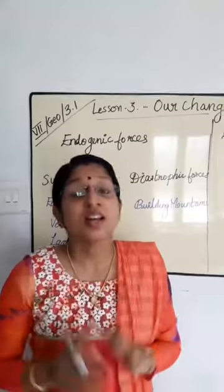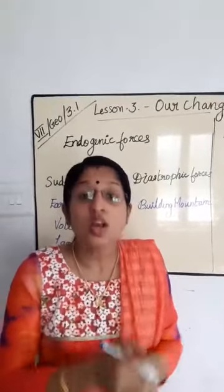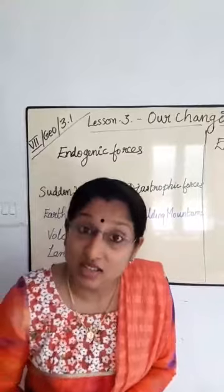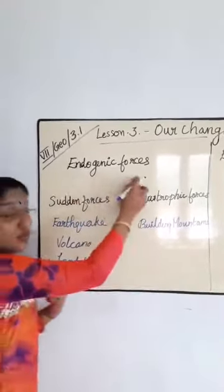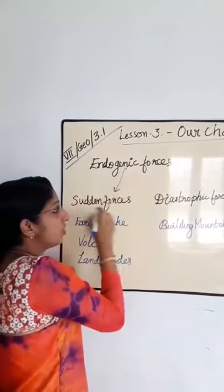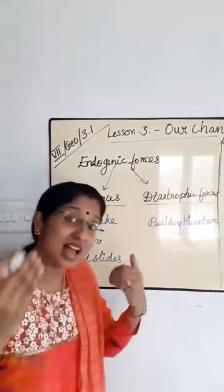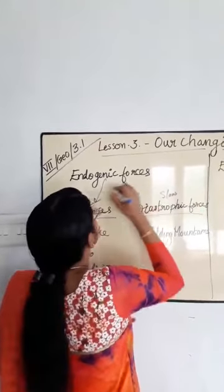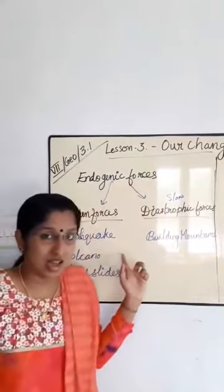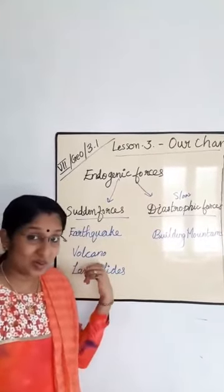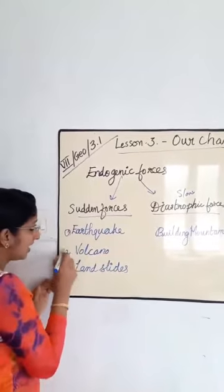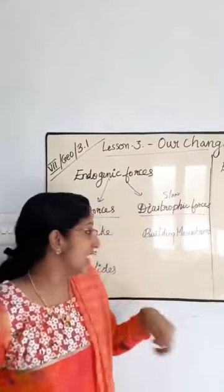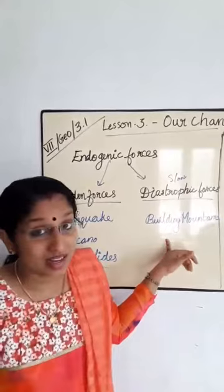Endogenic forces can be classified into sudden forces and diastrophic forces. Diastrophic forces are also known as slow movements. Sudden forces include earthquakes, volcanoes, and landslides. Diastrophic forces or slow movements include the building of mountains.